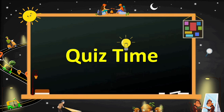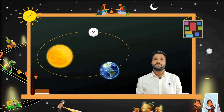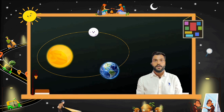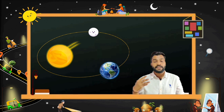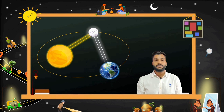Now it's time for a quiz! The first question is: which one of the following is not a source of light? The answer is the moon. You might wonder why — the sun is a luminous object which has its own energy and light. When sunlight goes to the moon's surface, the moon reflects those light rays toward Earth. That's why we are able to see the moon at night.